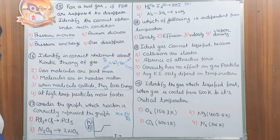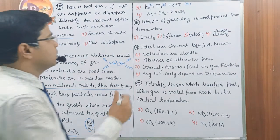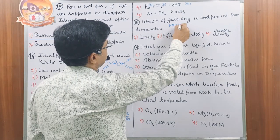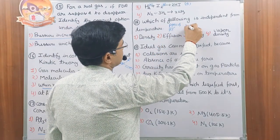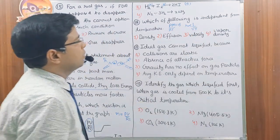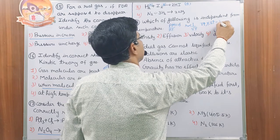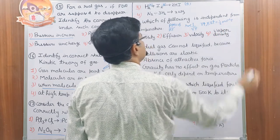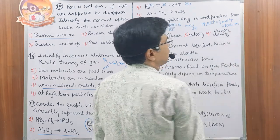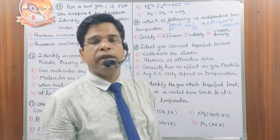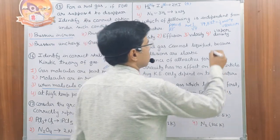Question 18: Which property is independent of temperature? Density — from PM = DRT, density depends on temperature. Effusion — inversely proportional to the square root of temperature. Velocity — increases with temperature. Vapor density × 2 = molar mass, and molar mass is always constant regardless of temperature. So vapor density is independent of temperature. Correct answer is option 4.